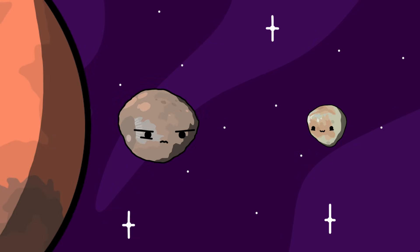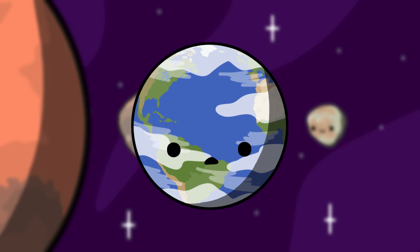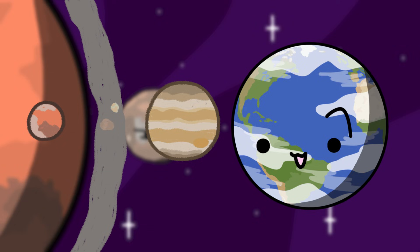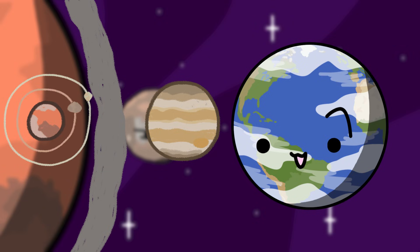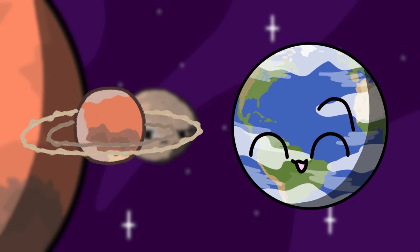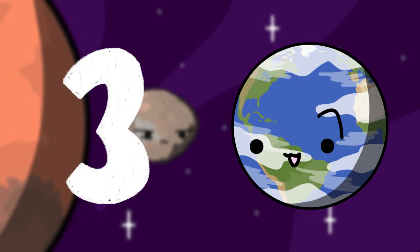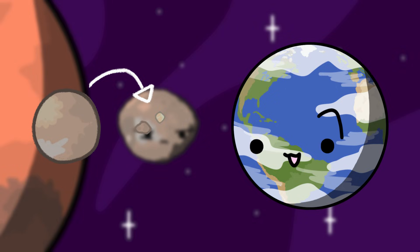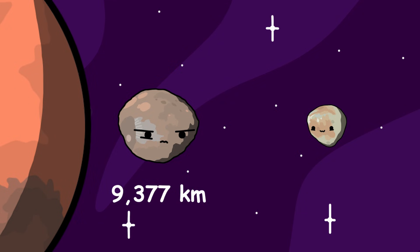Mars has two moons named Phobos and Deimos. Their origins are unknown, but we have some good guesses. The first theory says they're both captured asteroids from the asteroid belt, captured by Mars around 1 to 2.7 billion years ago. The second theory says they are debris left over from forming Mars that remained in orbit and slowly accreted over time. The third theory says they are remains of a larger moon that once orbited Mars. Phobos orbits 9,377 kilometers from Mars, meanwhile Deimos orbits 23,460 kilometers from Mars.